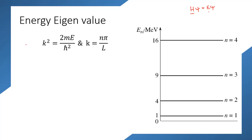From our Schrodinger equation d²ψ/dx² + (2mE/ℏ²)ψ = 0, we substituted 2mE/ℏ² = k². We already found from boundary conditions that k = nπ/L. So why not use this to calculate the energy eigenvalue?